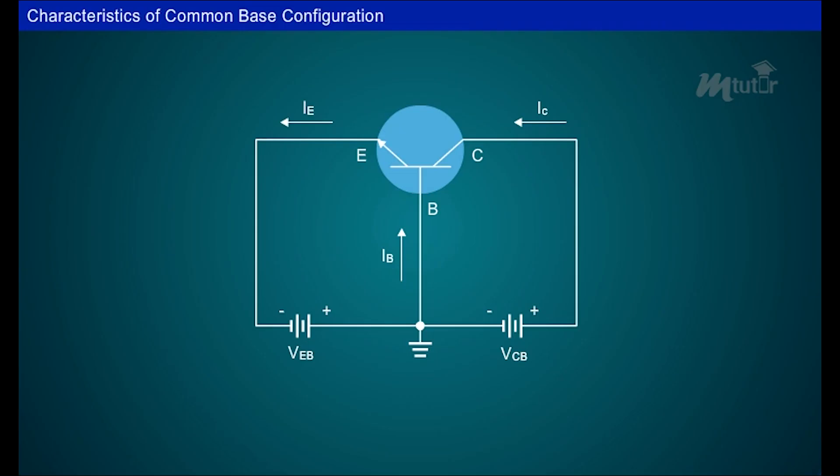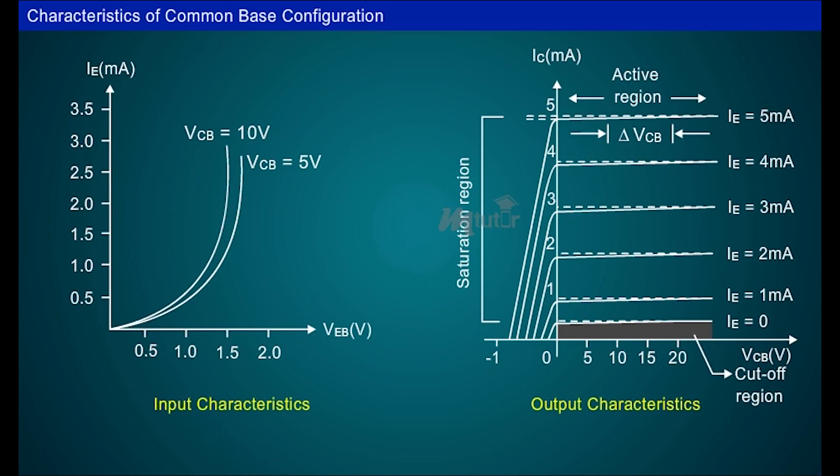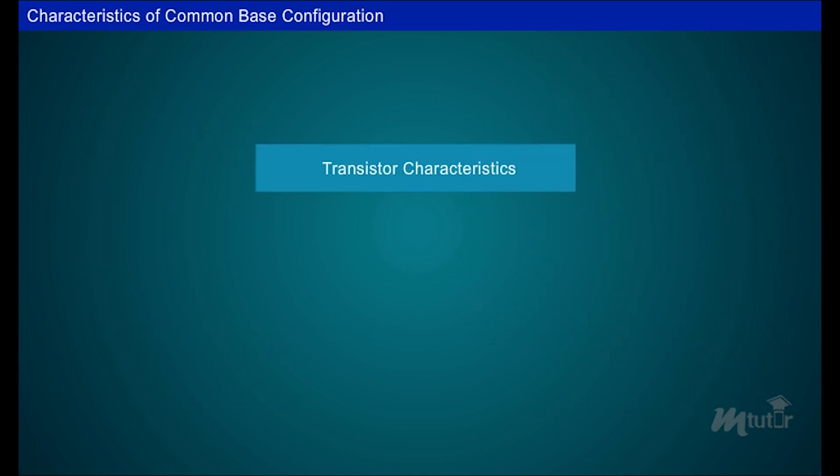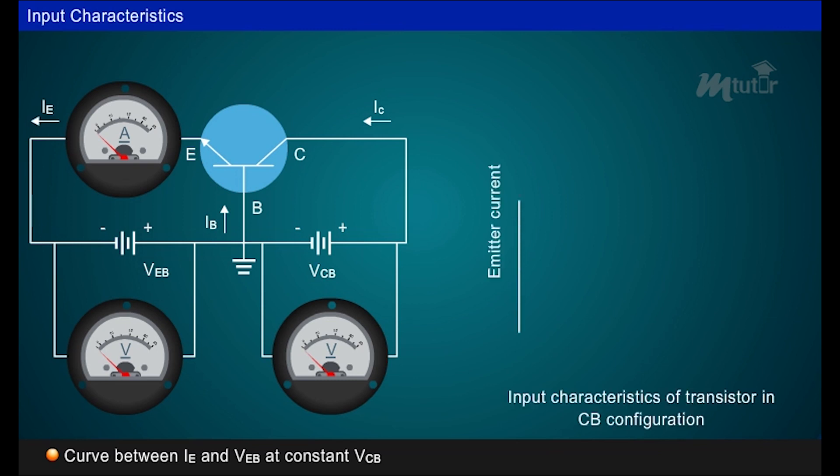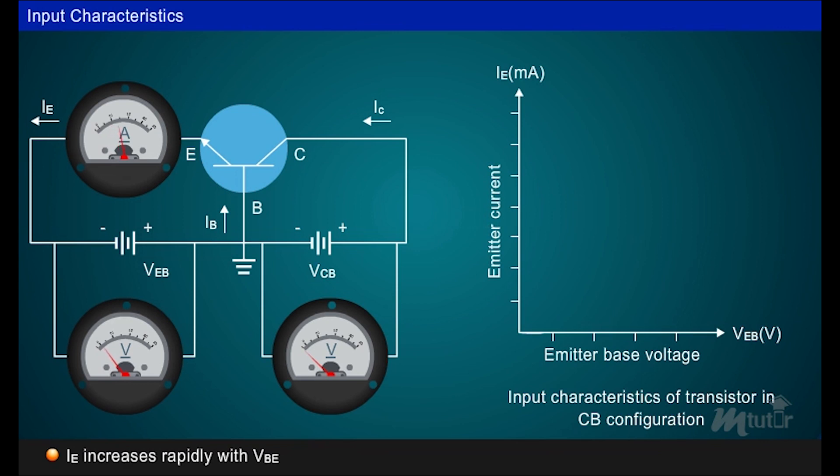To understand complete electrical behavior of a transistor, it is necessary to study the interrelation of various currents and voltages. These relationships can be plotted graphically, which are commonly known as the characteristics of transistor. The characteristics of transistor in any configuration are input and output characteristics. Input characteristics is the curve between input current IE, emitter current and input voltage VEB, emitter base voltage at constant collector base voltage VCB. After the cut-in voltage, the emitter current IE increases rapidly with small increase in emitter base voltage VEB.